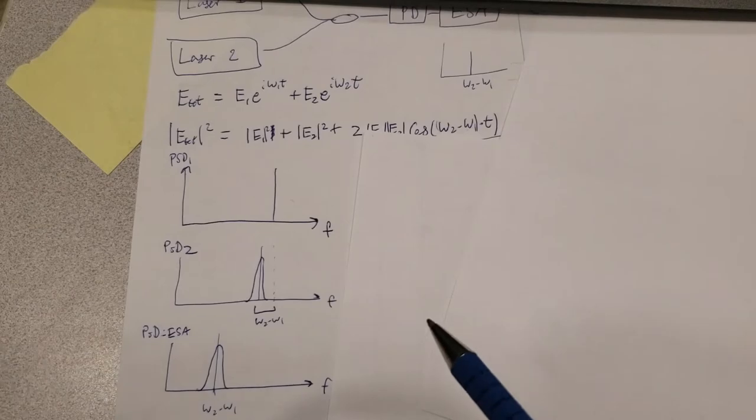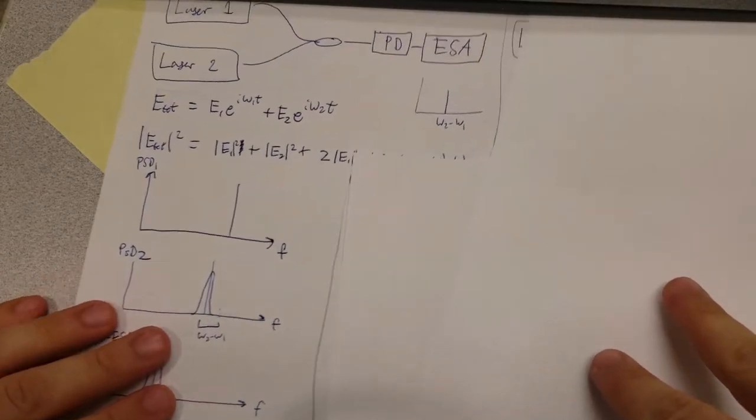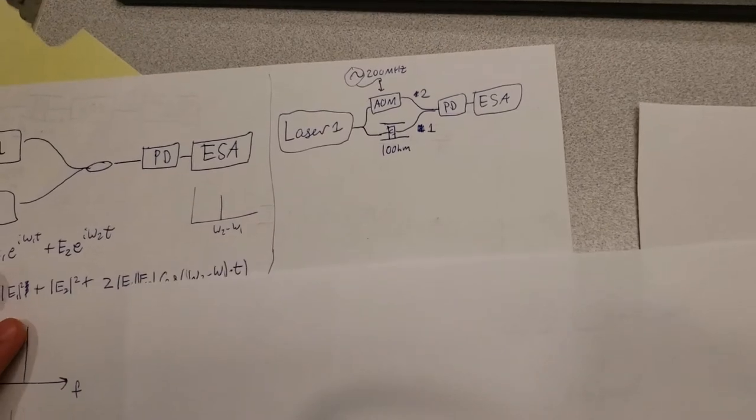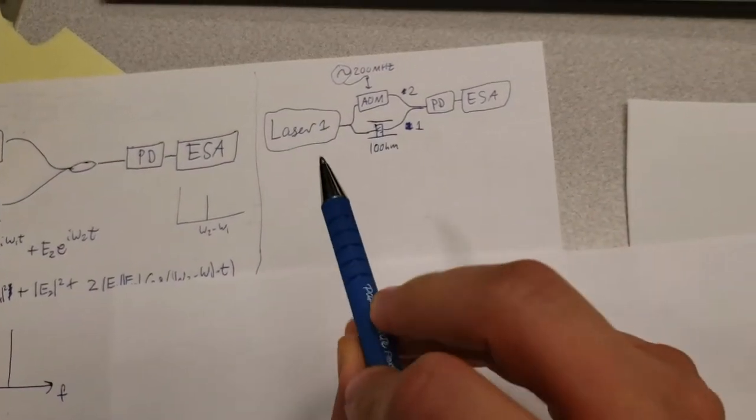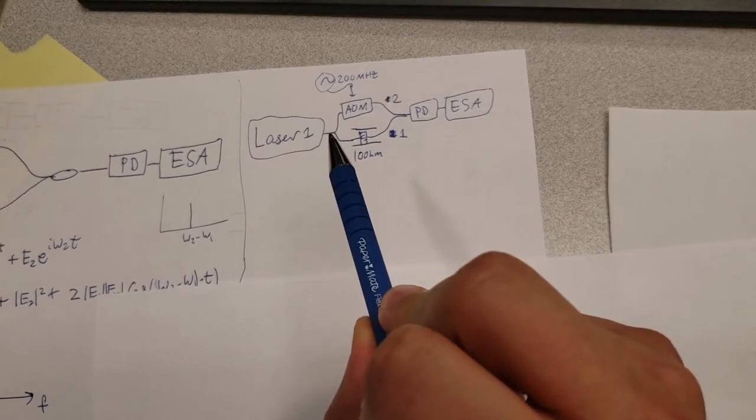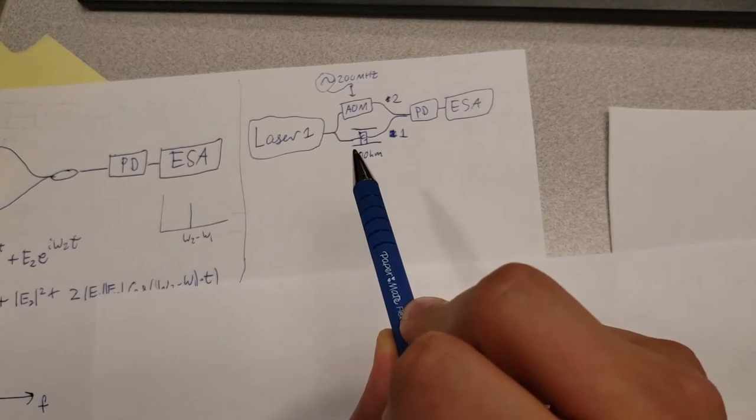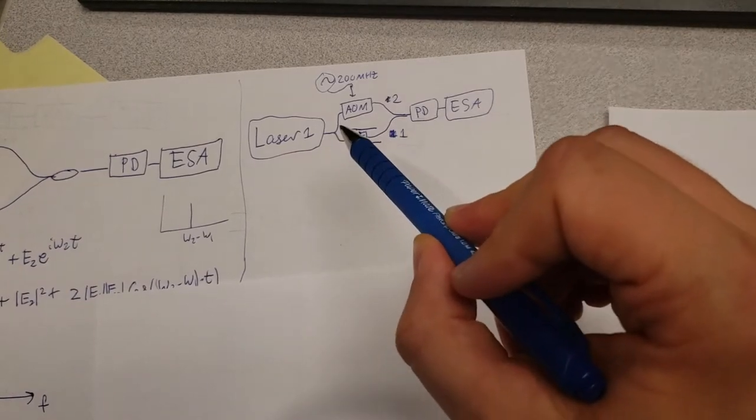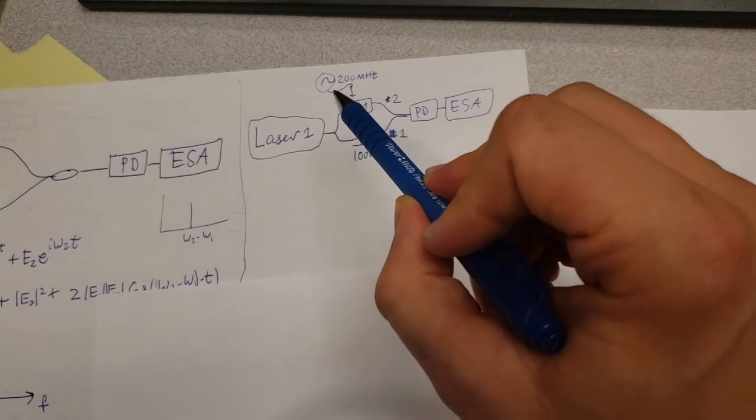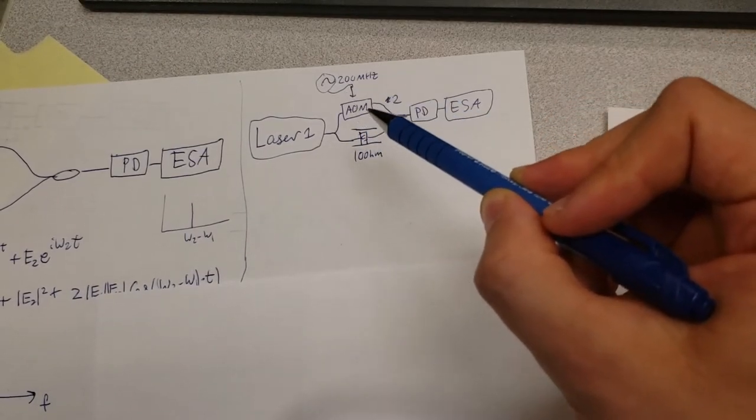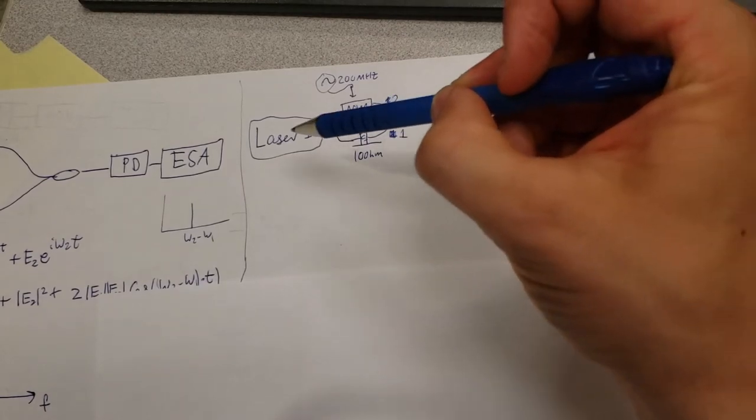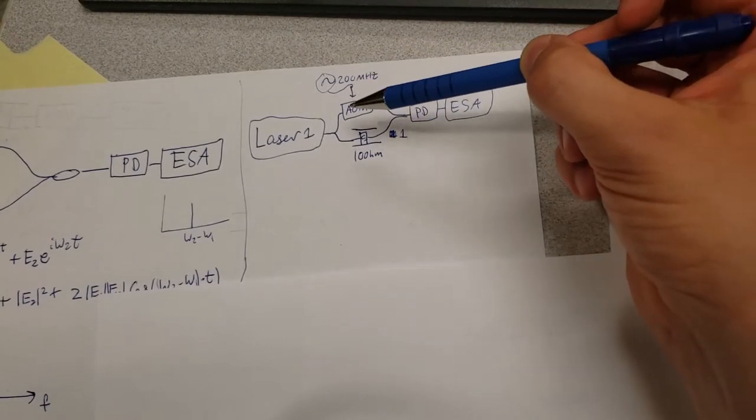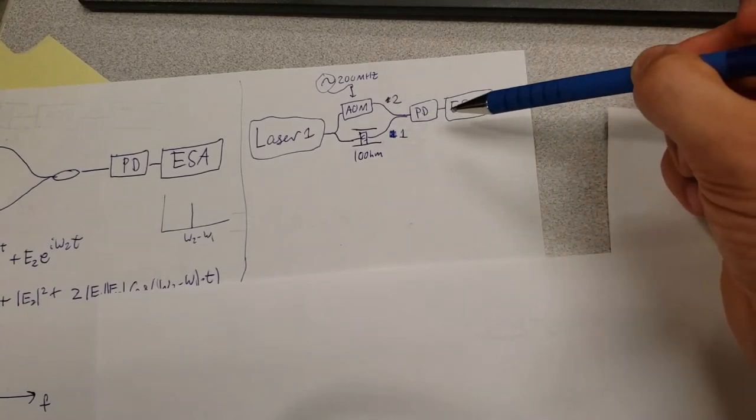To do that we can use a slightly different technique that relies on an acoustic optic modulator. In this setup we're going to measure the line width of a laser using the laser itself. The idea is that we send the laser into a coupler which splits it 50-50 between two branches. One branch is delayed by 100 kilometers or some appropriately large distance and then is sent onto the photodiode. The other branch goes into an acoustic modulator that's being driven with a 200 megahertz sine wave. The acoustic modulator sends sound waves through a crystal that the light is traveling through, which shifts the frequency by 200 megahertz. We then send the signal back onto the photodiode and connect that to the electrical spectrum analyzer.